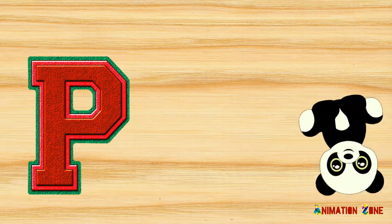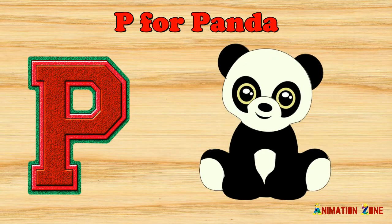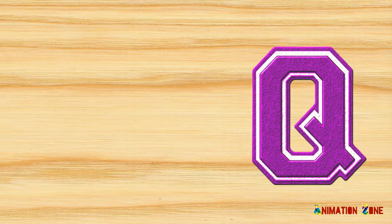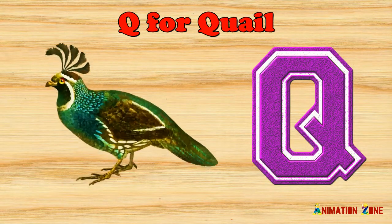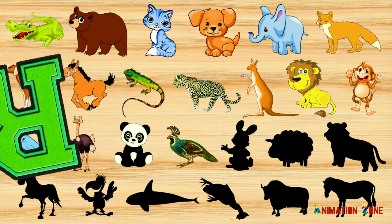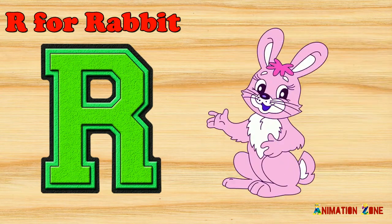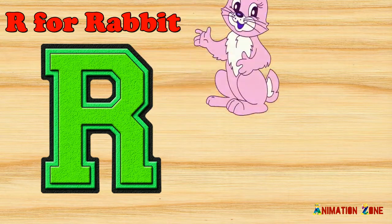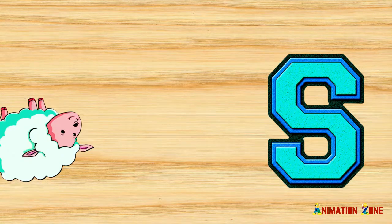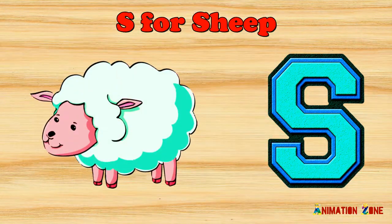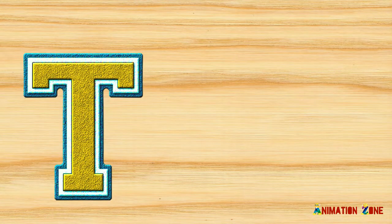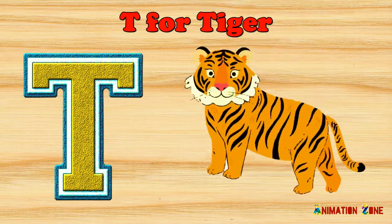P. P for panda. Q. Q for quail. R. R for rabbit. S. S for sheep. T. T for tiger.